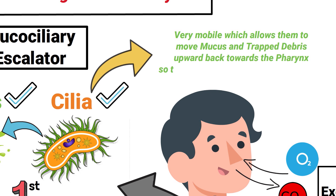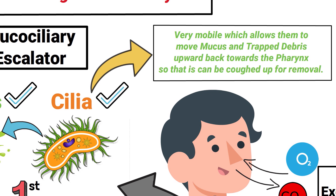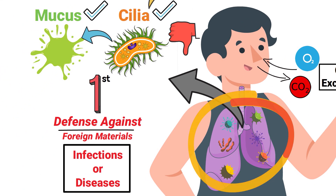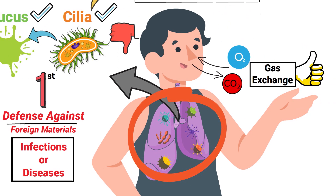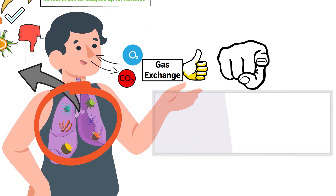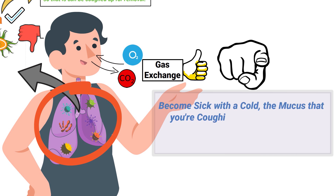Cilia structures are very mobile, which allows them to move mucus and trapped debris upward back towards the pharynx so that it can be coughed up for removal. Without cilia, our lungs would constantly be exposed to millions of potentially harmful viruses and bacteria during normal breathing.